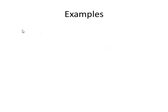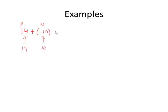Let's try 14 plus negative 10. Here we have two integers with opposite signs — 14 is positive, while negative 10 is negative. The procedure is to subtract the absolute values. The absolute value of 14 is 14, and the absolute value of negative 10 is 10. When we subtract those two, 14 minus 10 is 4. Then the sign of our answer is the same as the sign of the number that had the larger absolute value, which here was positive 14. So the answer is positive 4.